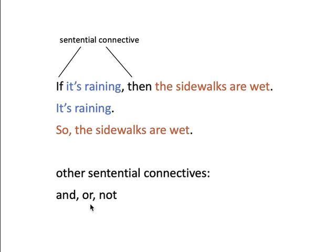Other sentential connectives we'll see are the word 'and,' the word 'or,' and the word 'not.' So the conditional, as well as 'and,' 'or,' and 'not,' are for our deductive logic — which we'll dive into in much greater detail starting next week — the four core connectives. Again: the conditional, conjunction (and), disjunction (or), and negation (not).